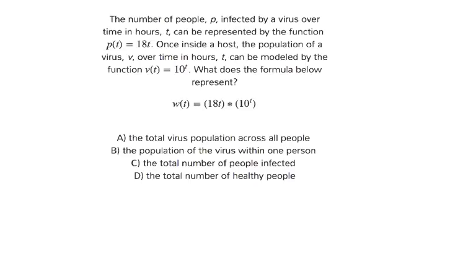The number of people, p, infected by a virus over time in hours, t, can be represented by the function p of t equals 18t. Once inside a host, the population of the virus over time in hours, t, can be modeled by the function v of t equals 10 to the t.